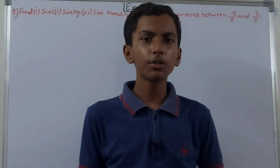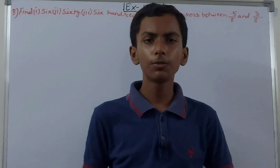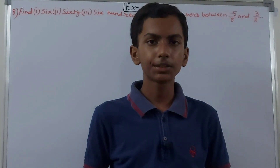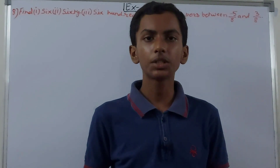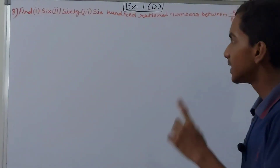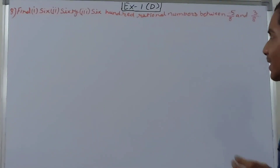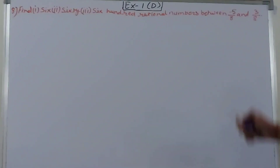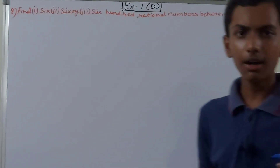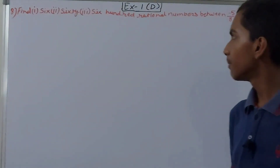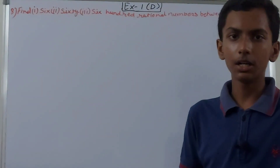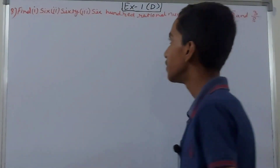Hello friends, welcome back to my YouTube channel Lock Your Learning. In this video we are going to solve ICAG Mathematics Class 8, Chapter 1 - Rational Numbers, Exercise 1D, Question Number 8. The question asks us to find 6, 60, and 600 rational numbers between -5/8 and 3/8. Here we have to do a little thinking — we have to find these separately.